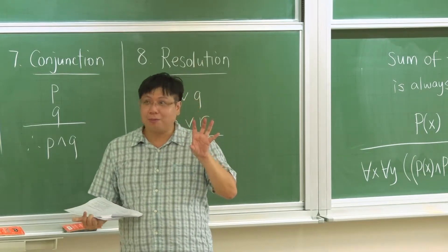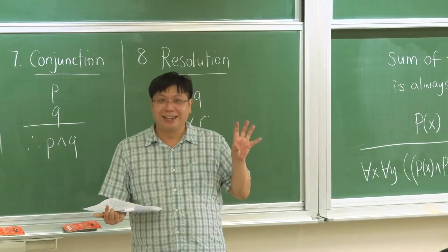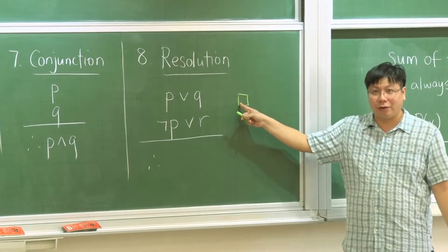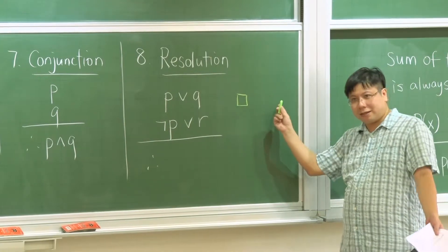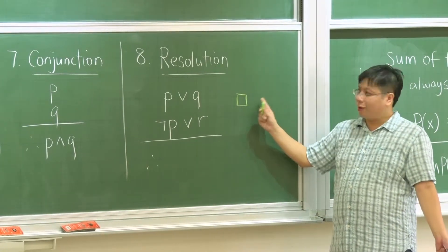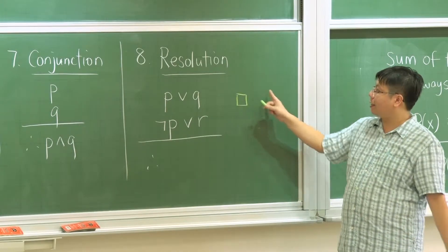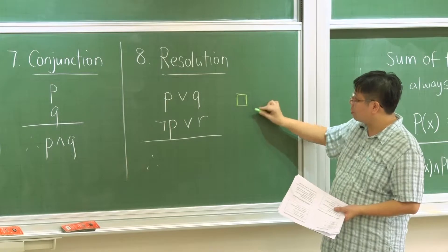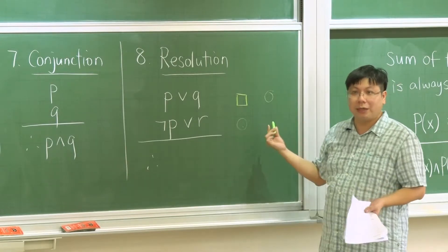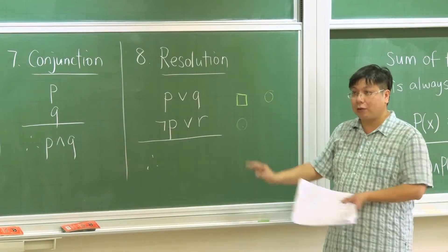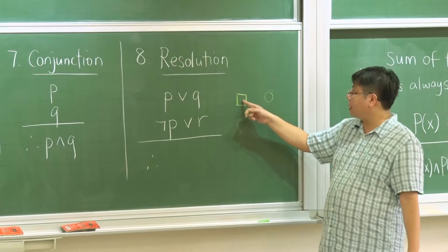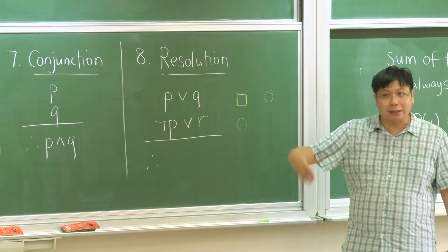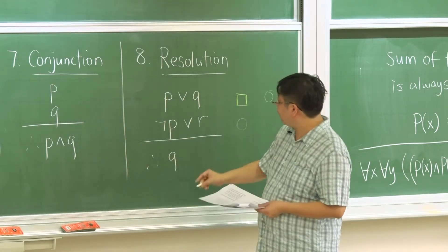Think of the game Minesweeper: sometimes you're not certain whether there's a mine somewhere, but using logical deduction — if there's a mine here then there's a mine there, or if there's no mine here then there must be a mine elsewhere — you can conclude that there has to be a bomb in a certain region, so you won't click there.